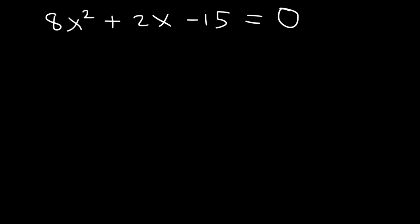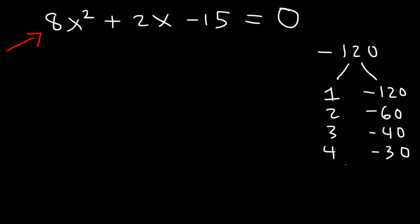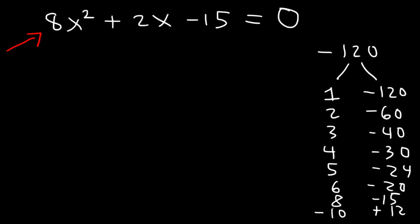Here's another problem. How can we factor this trinomial when the leading coefficient is not 1? We need to multiply 8 and negative 15. 8 times negative 15 is negative 120. Now what two numbers multiply to negative 120 but add to 2? Making a list: 1 and 120, 2 and 60, 3 and 40, 4 and 30, 5 and 24, 6 and 20, 8 and 15 — 10 and 12 seem promising. Positive 12 and negative 10 add up to positive 2. So we're going to replace 2x with 12x and negative 10x, and then factor by grouping.